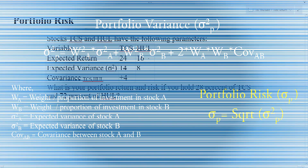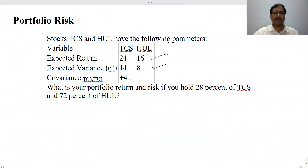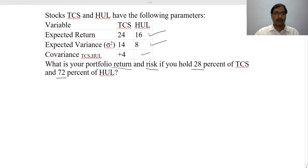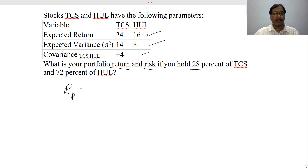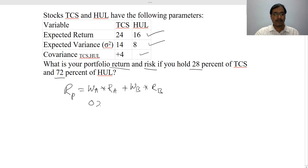There are two equations used to calculate portfolio variance. In this video I will show you the first one, and in my next video I will show you the second. Here are the expected return, expected variance, covariance, and weights of a portfolio of two stocks. Based on this, we need to calculate portfolio return and portfolio risk. To calculate the portfolio return: Return on portfolio equals weight of A times return of A plus weight of B times return of B. Here, A is TCS and B is HUL. So: 0.28 times 24 plus 0.72 times 16, which gives a portfolio return of 18.24%.